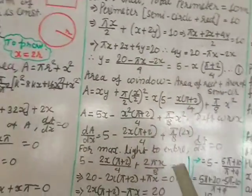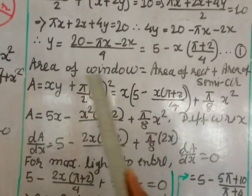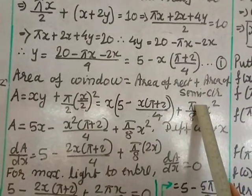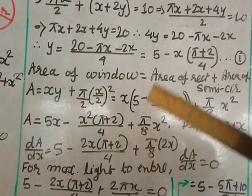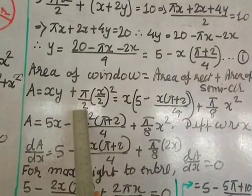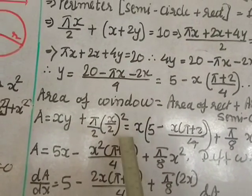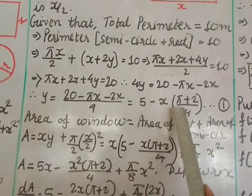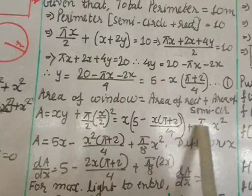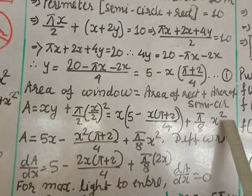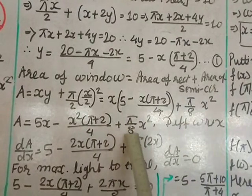Area of the window equals area of rectangle plus area of semicircle. For maximum light, area must be maximum. Area A = x·y + (1/2)πr² = x·y + (π/2)(x/2)² = xy + πx²/8. Substituting y from equation 1: A = x[5 − x(π+2)/4] + πx²/8 = 5x − x²(π+2)/4 + πx²/8.